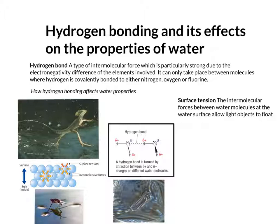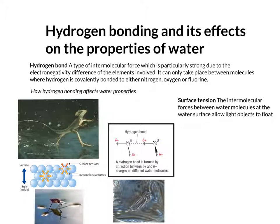Looking at how hydrogen bonding affects water properties, surface tension is when the intermolecular forces between water molecules at the water surface allow light objects to float because the water molecules are held together next to each other by hydrogen bonding.